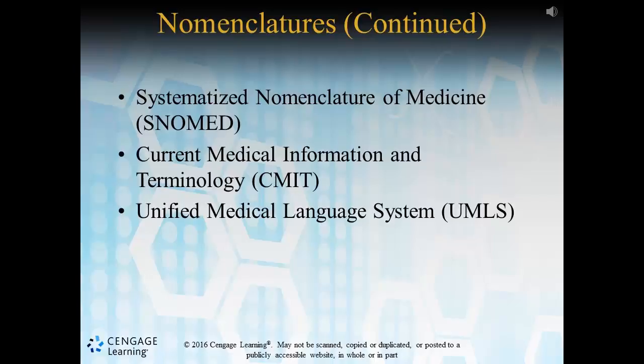Systematized Nomenclature of Medicine, or SNOMED, was created in the 70s and provides the ability to codify all activities within a patient's chart. This would include things like procedures, diagnoses, signs and symptoms, and much more.